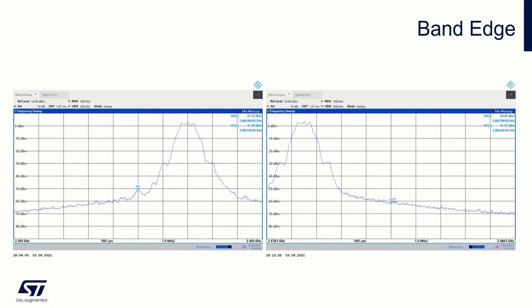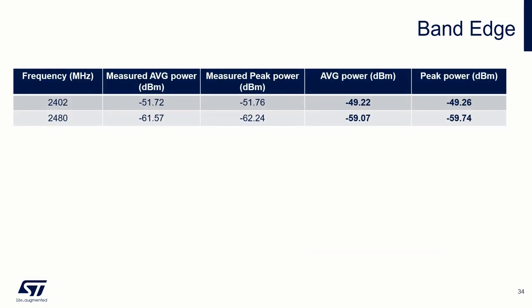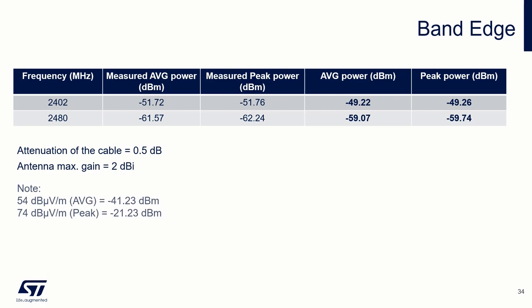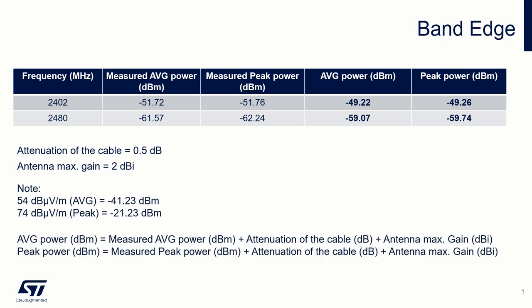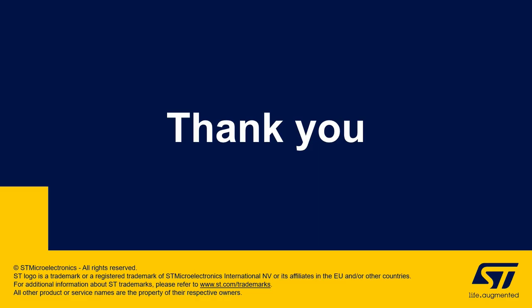Here are examples of band edge measurement for all edges of the band. How to evaluate the measured plots: in the region below the band we find the maximum value up to 2400 MHz, and the maximum value above 2483.5 MHz. After taking into account the attenuation of the cable and the antenna gain, we reach the average and peak values which we compare with the limit of minus 41 dBm. And that's all for this session. Thank you for watching — hope you enjoyed the video and see you next time.